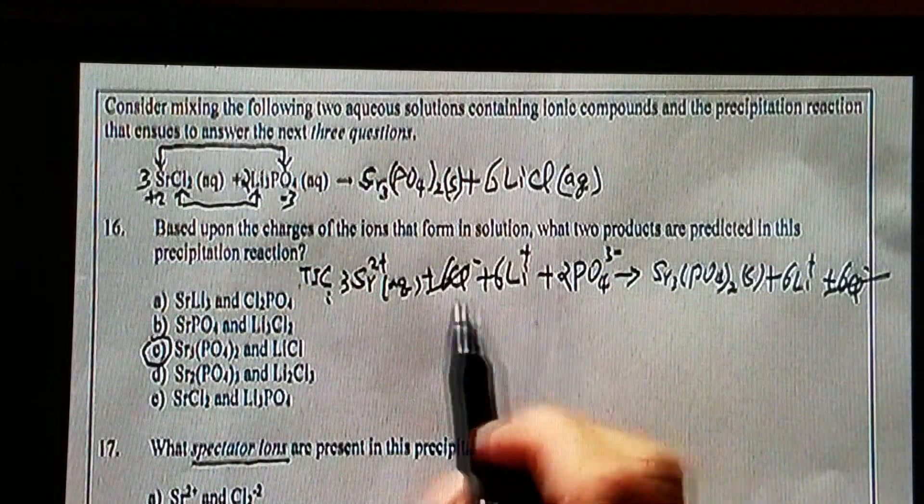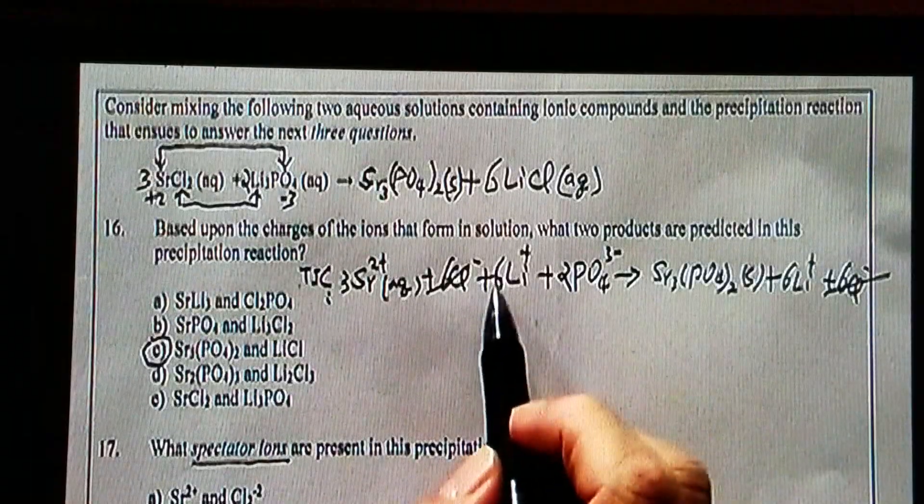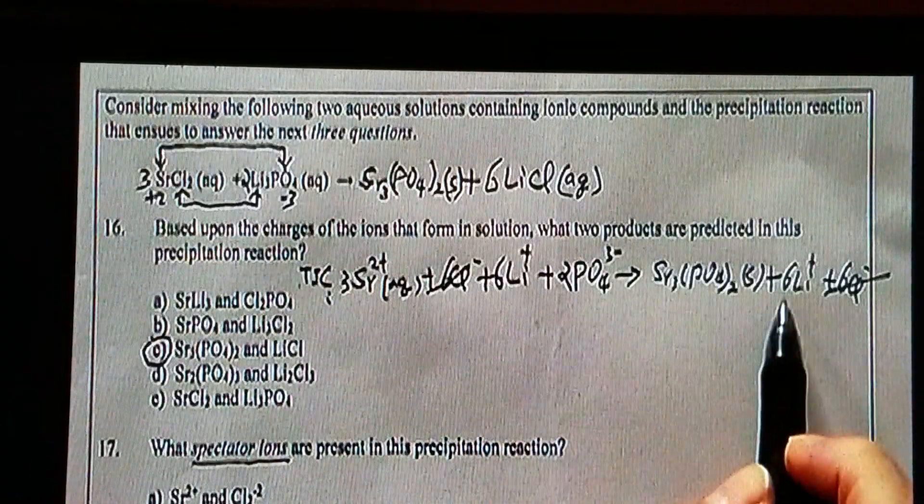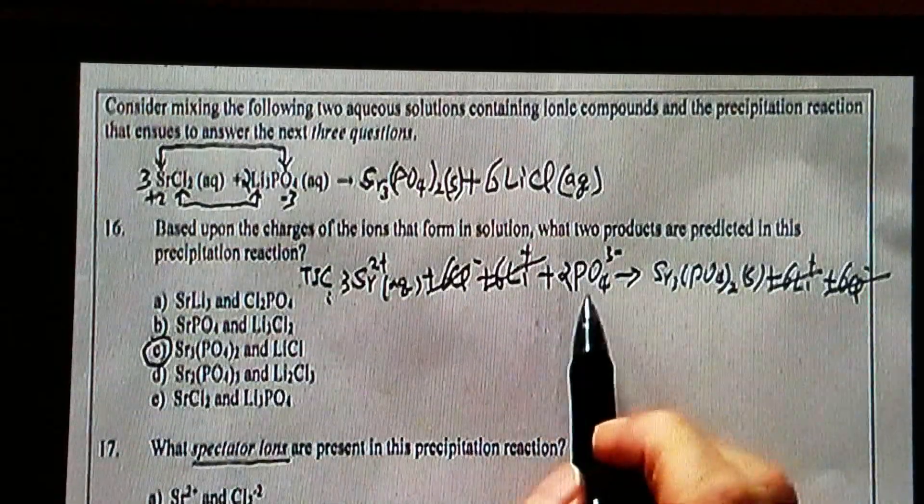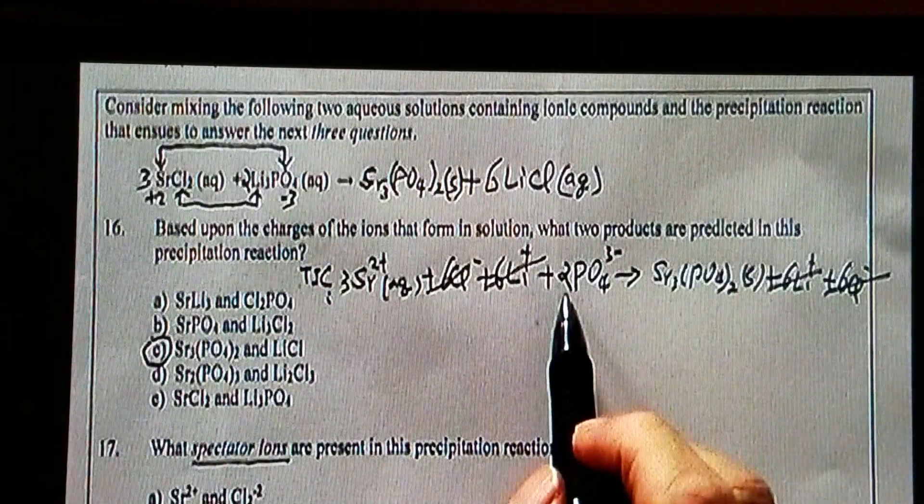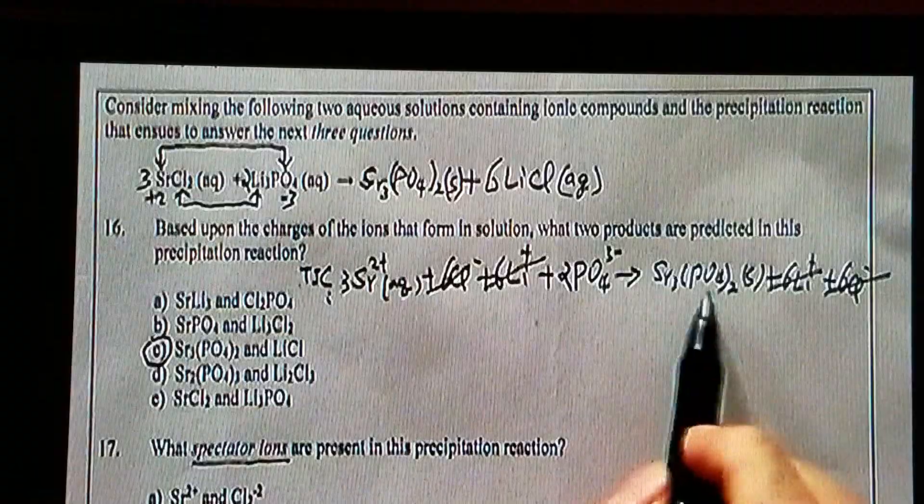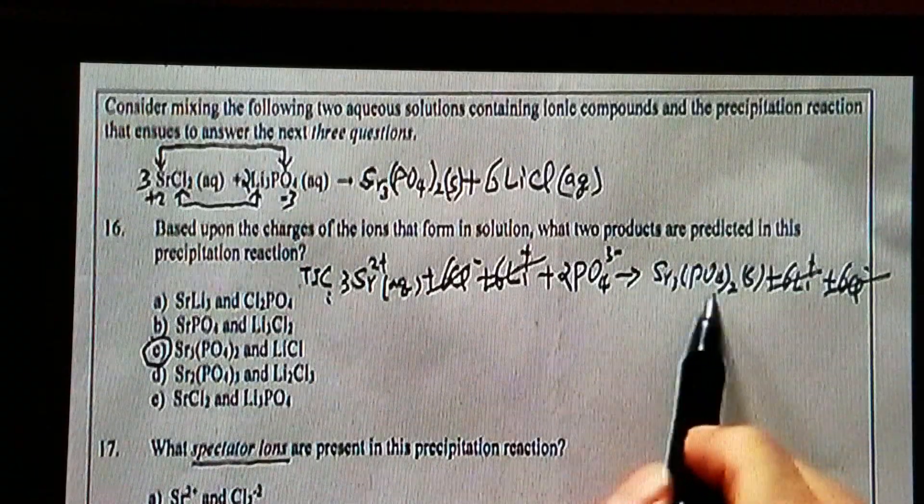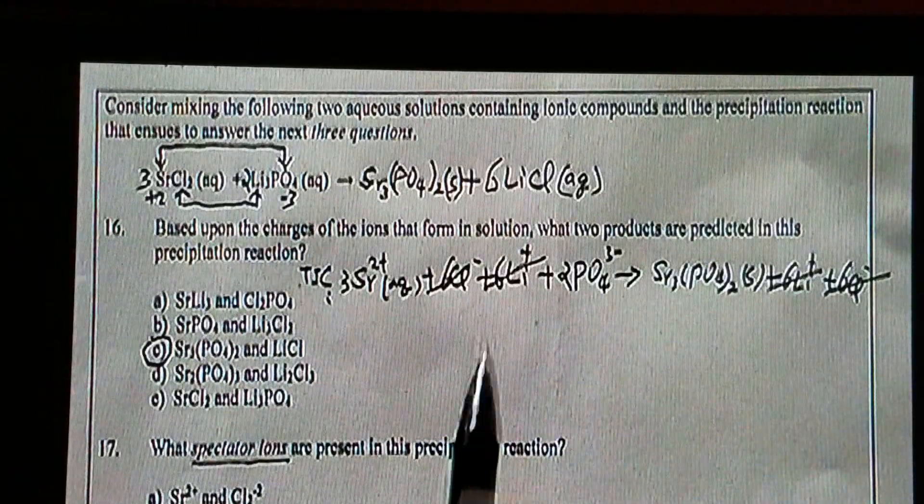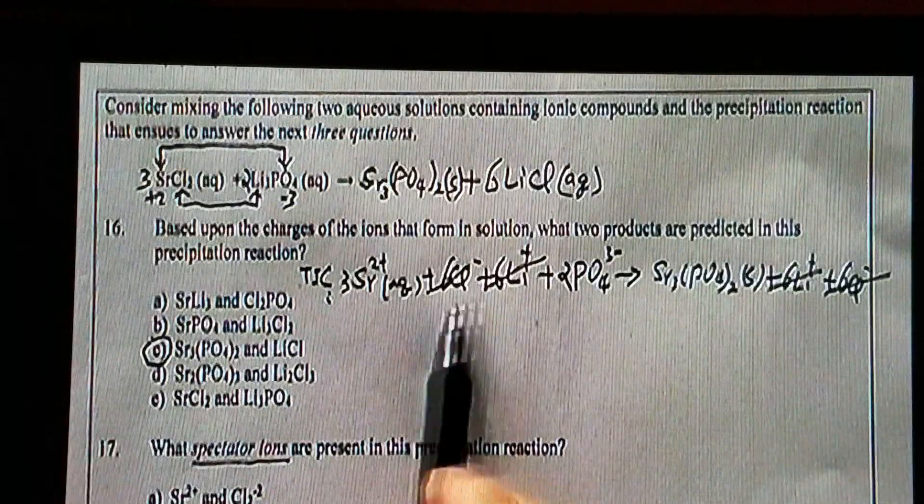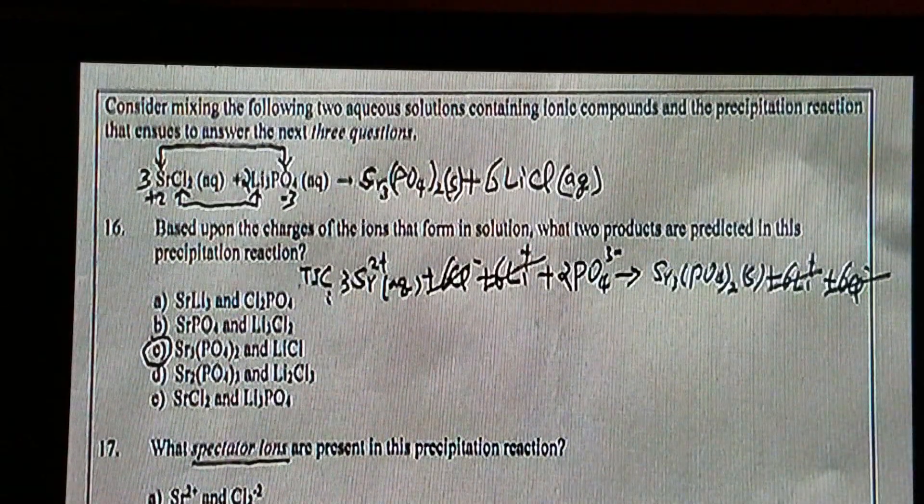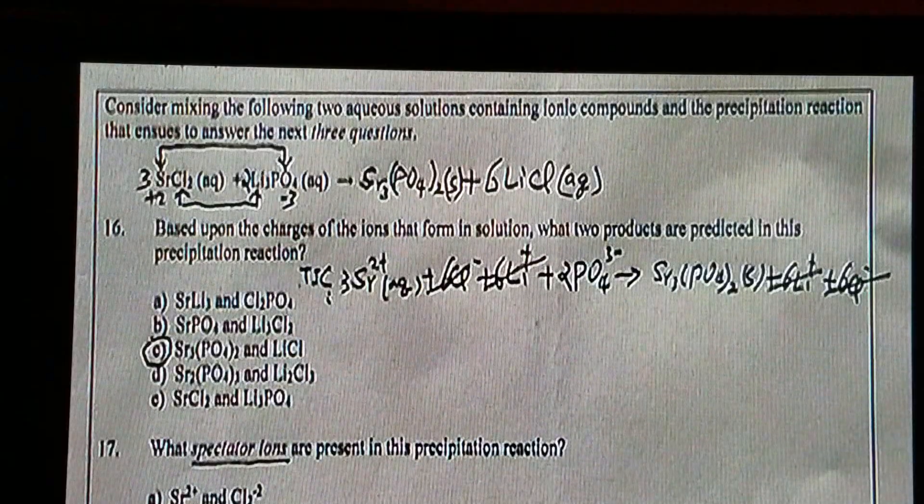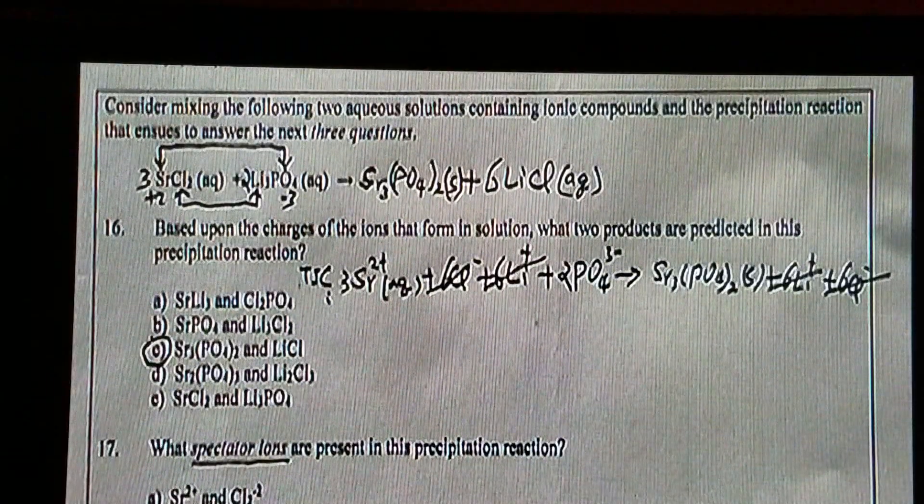Keep going. Six lithium on the left-hand side, six lithium on the right-hand side. And then phosphate, two on the left-hand side, two on the right-hand side right here, but not as spectator ions. So therefore, we have two spectator ions, lithium and chloride. Lithium and chloride, this should be the correct answer, D.